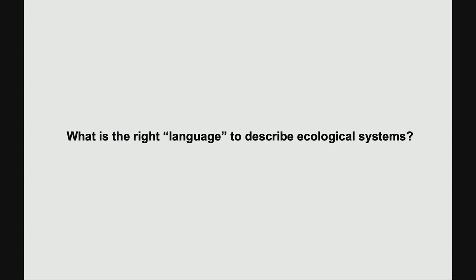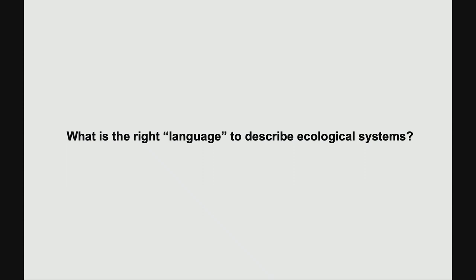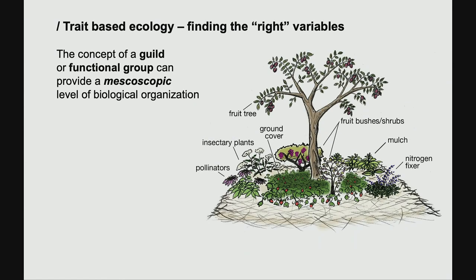Traditional ecologists have thought about this for a while, and they have what is called trait-based ecology. Here's just one example to give an idea of what this could mean. Roles could be pollinators, herbivores, the insects eating the plants, organisms in the soil that are recycling or fixing nitrogen. To some extent this is a human construct, but in the case of plants, this is rooted in physiology and people understand the constraints and can explain quite a bit from these traits.